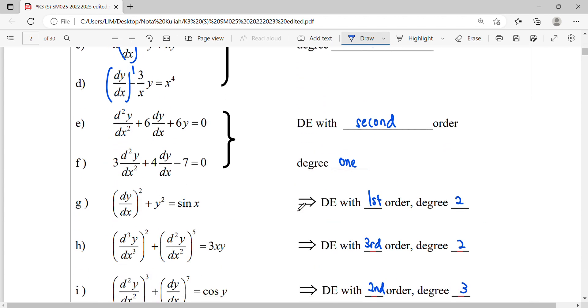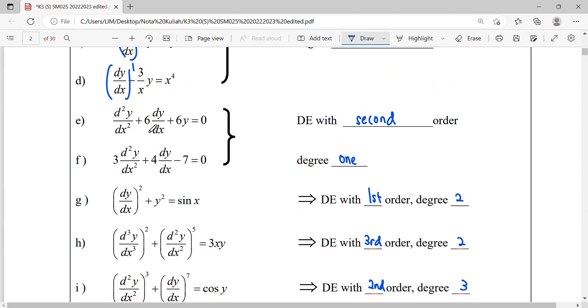Meanwhile, we can see the next example here. You can see the order, it comes to second derivative, so this differential equation with second order. Degree, their power still power of one.